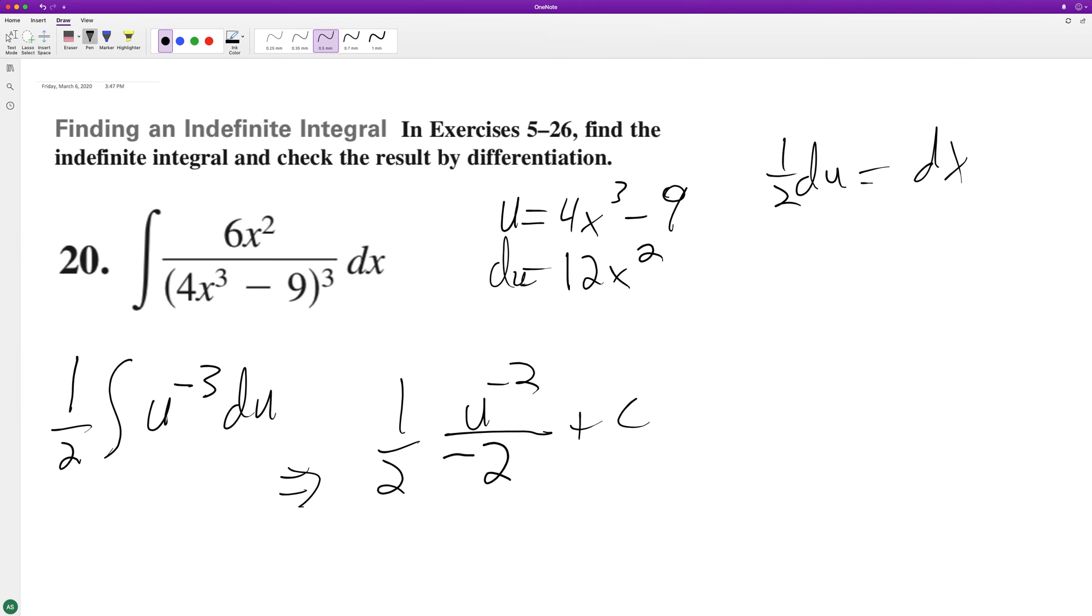Okay, plus C. So we get negative 1 over 4. I put the negative 2 up there.